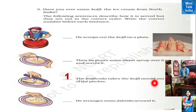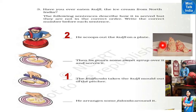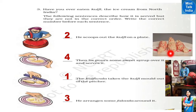Step 1: The kulfi wala takes the kulfi mold out of the matka (clay pot) — kulfi stays cold in clay pots. Step 2: He scoops the kulfi out onto a plate, removing the wooden stick from the mold. Step 3: He arranges some faluda (long vermicelli-like strands) around the kulfi. Step 4: He pours sweet syrup — like rose water or raspberry syrup — over it and serves it.